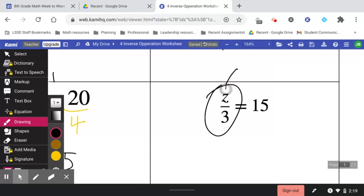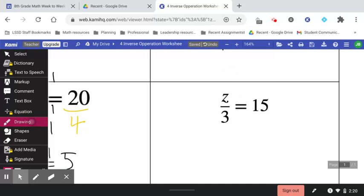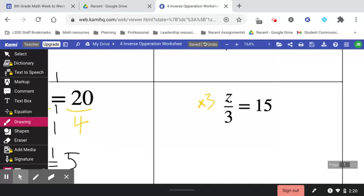Something divided by 3 is going to give me 15. Well, I want to use the opposite of division. Let's use multiplication. So I'm going to multiply by 3 on both sides, times 3, times 3.